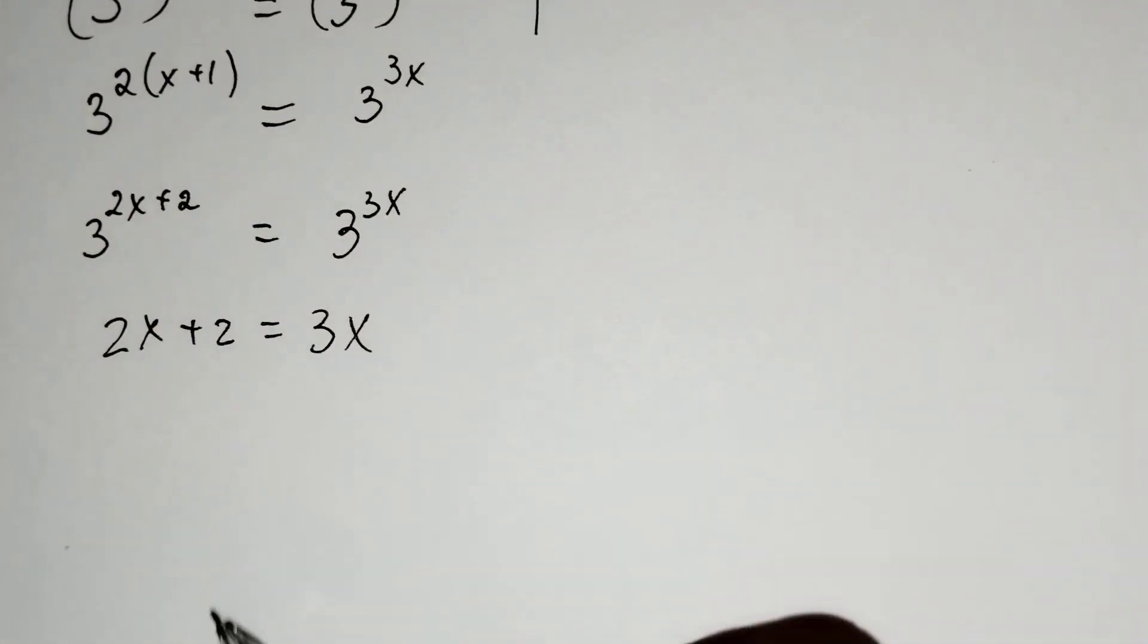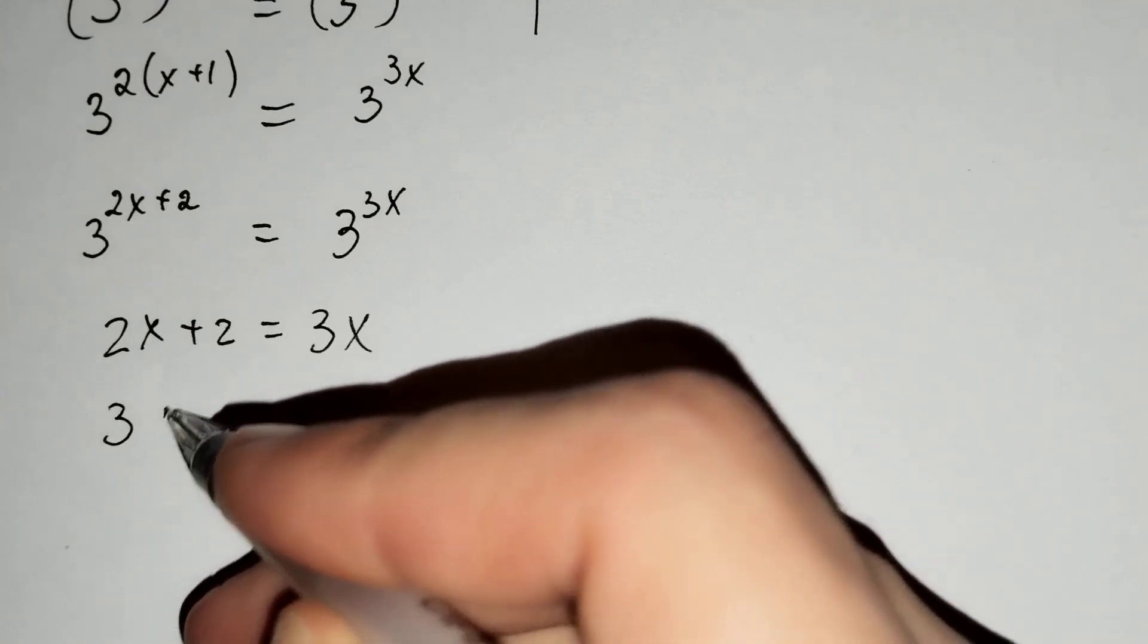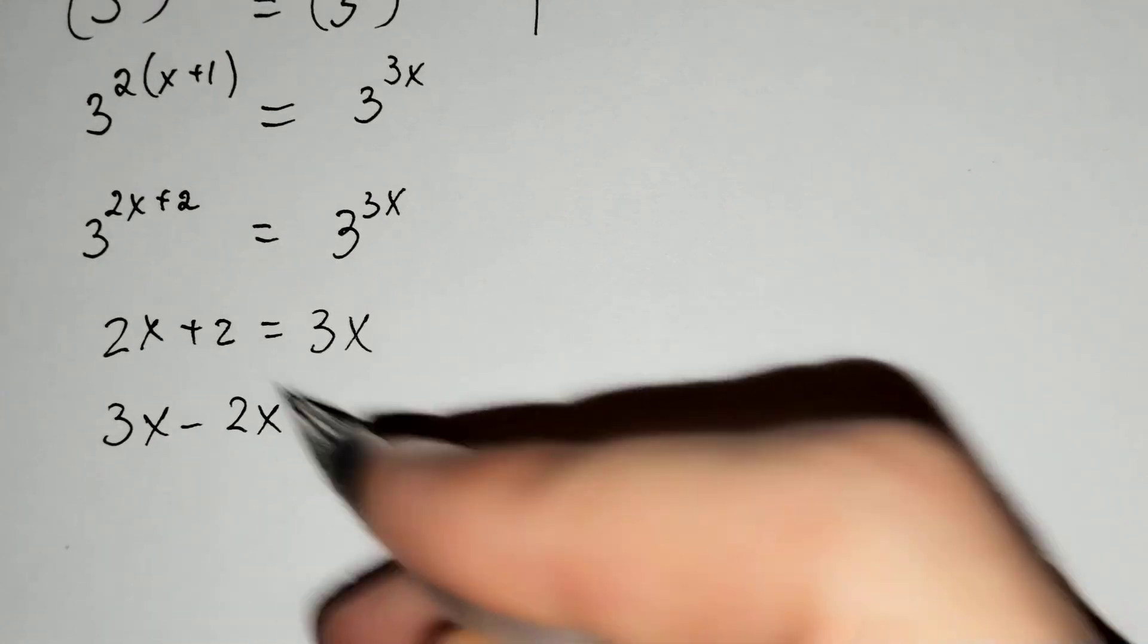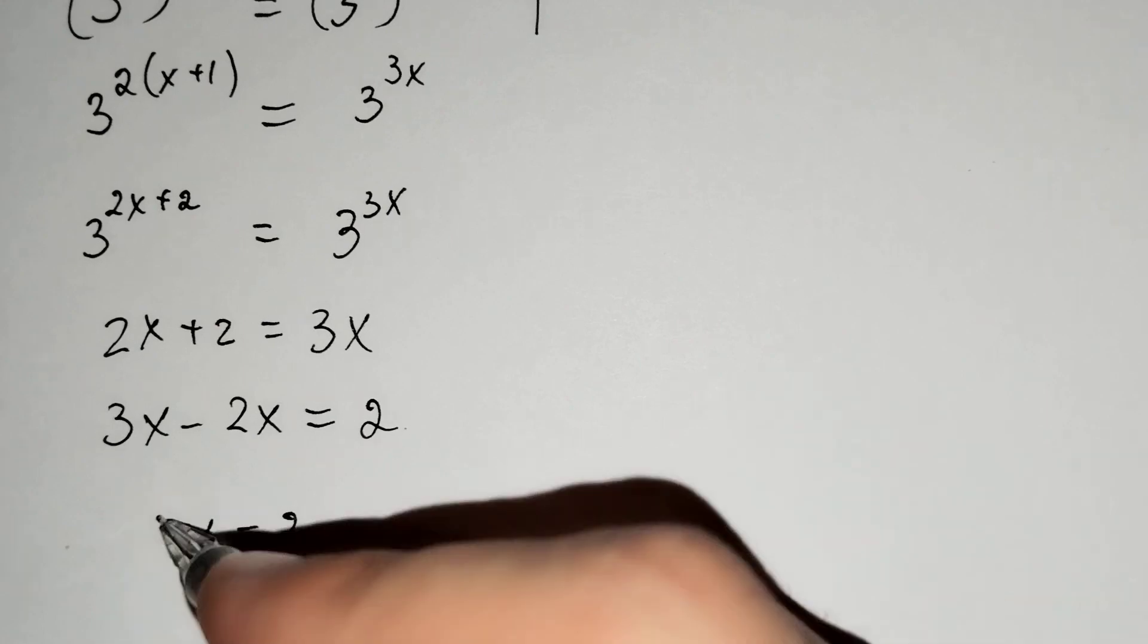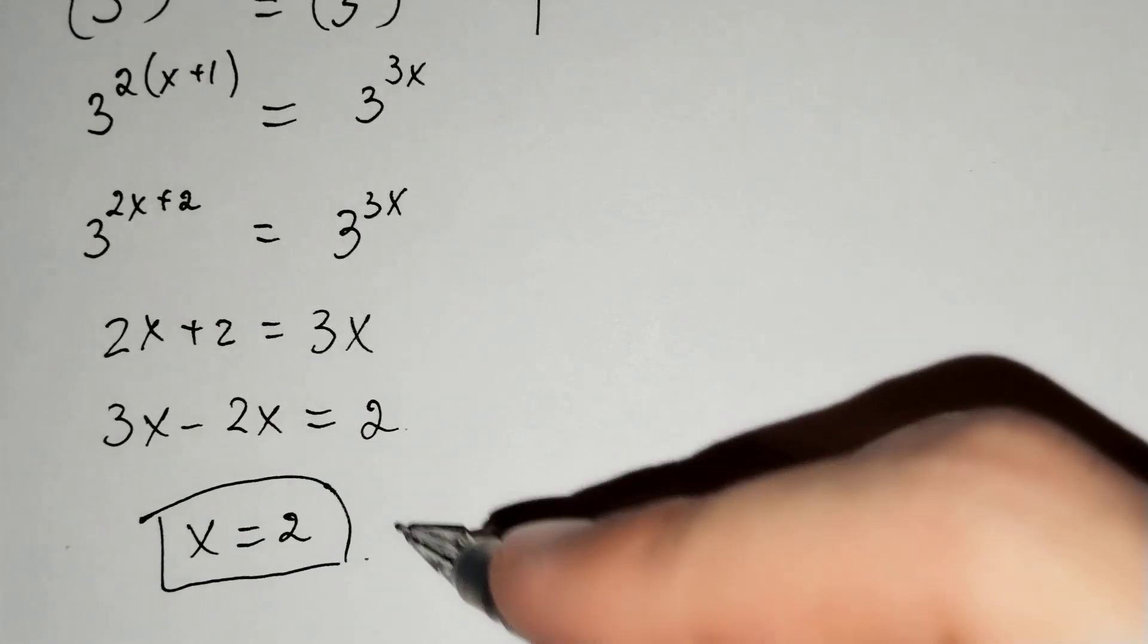If we solve for x from here, 3x minus 2x equals 2, and x equals 2. This is our answer.